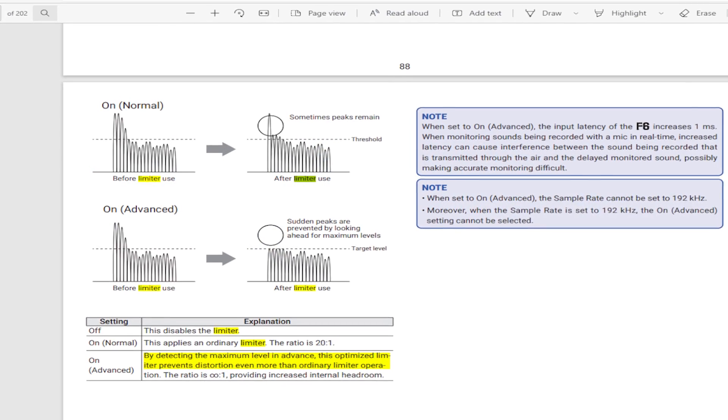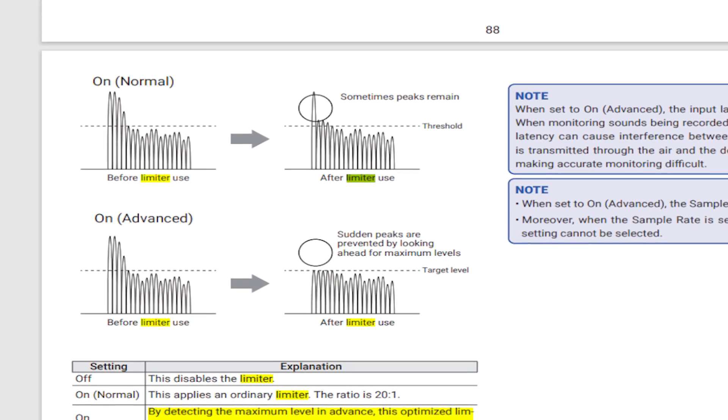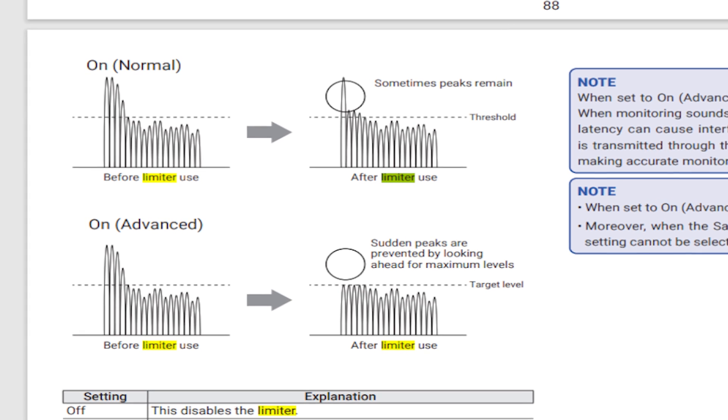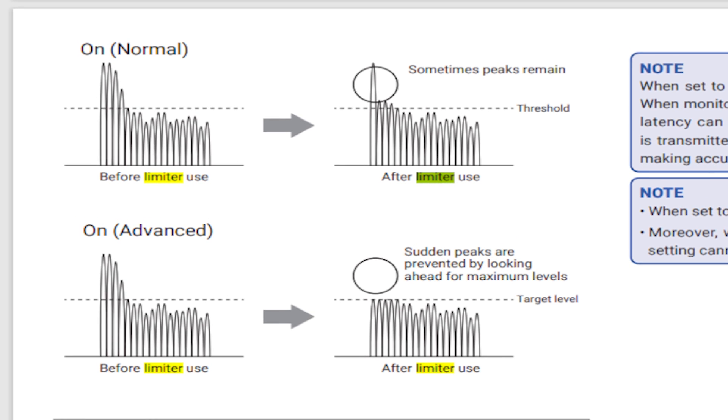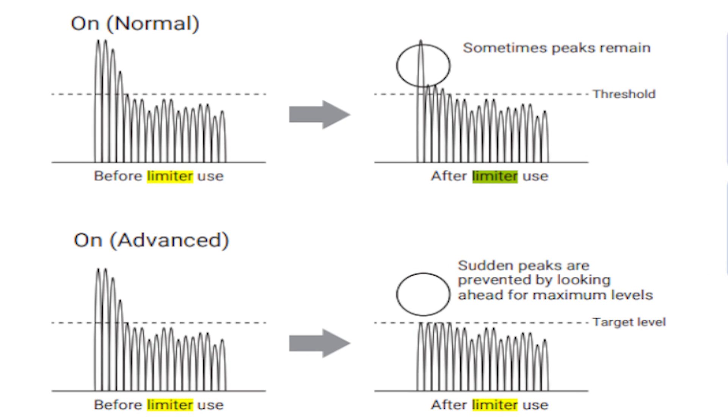In Normal settings, it applies to the output limiter as well — your left and right and your line out. Sometimes the peaks remain, meaning the peaks are inconsistent — hit or miss, it might get them or it might not, so it's less reliable. But in Normal you also have the option to manipulate all the variables that come into play with a limiter.